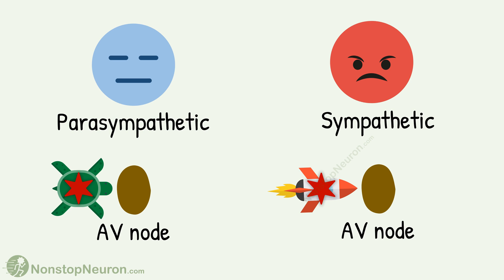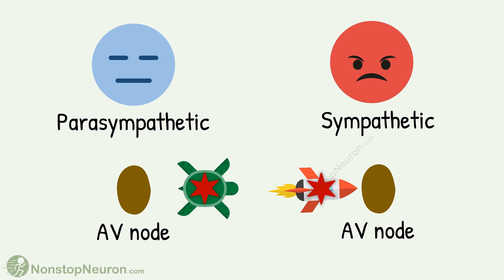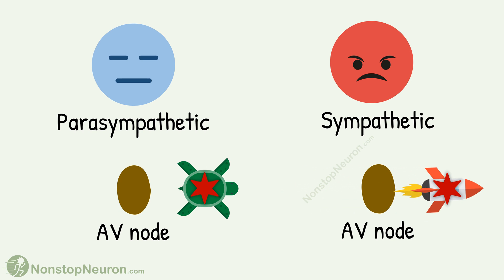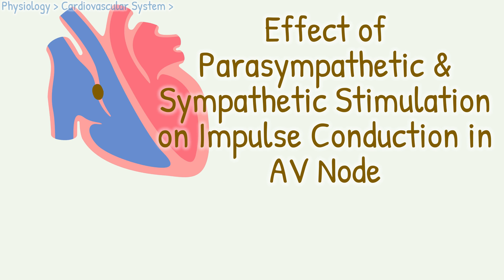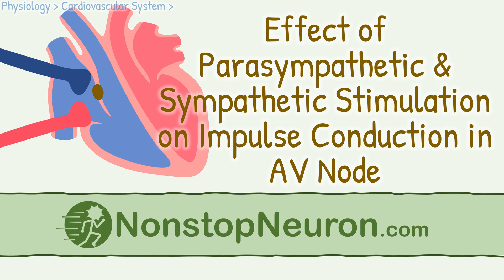The parasympathetic nervous system slows down the impulse conduction in the AV node, and the sympathetic nervous system speeds up the conduction. We will find out how exactly these effects are produced as we study the effect of parasympathetic and sympathetic stimulation on impulse conduction in the AV node. Let's get started.